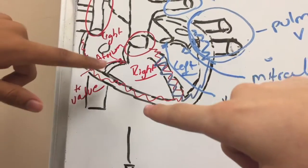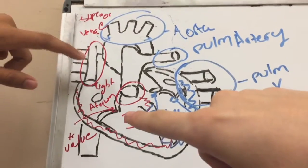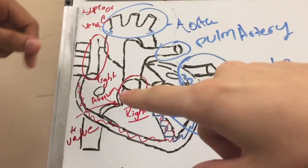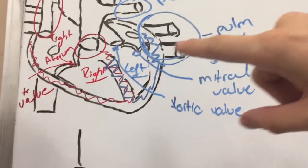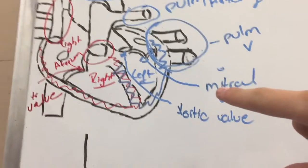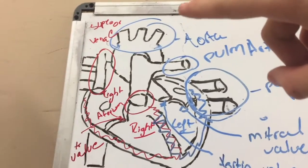Right here, the tricuspid valve. Right here you have the right atrium, which is the upper chamber, left atrium, and the lower chambers you have the right and left ventricles. And then you have the superior vena cava right here above.